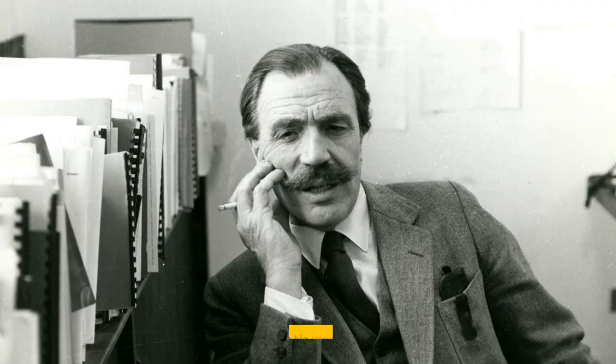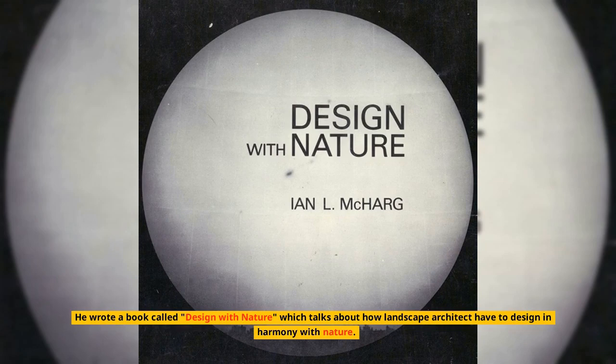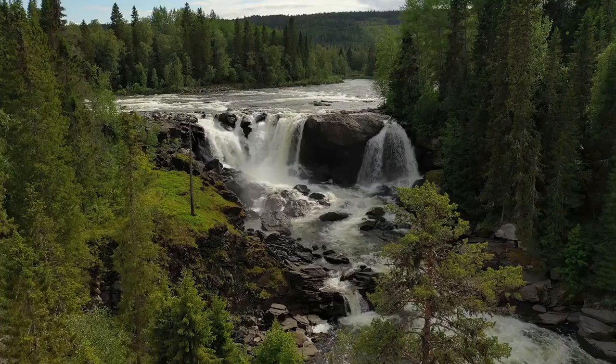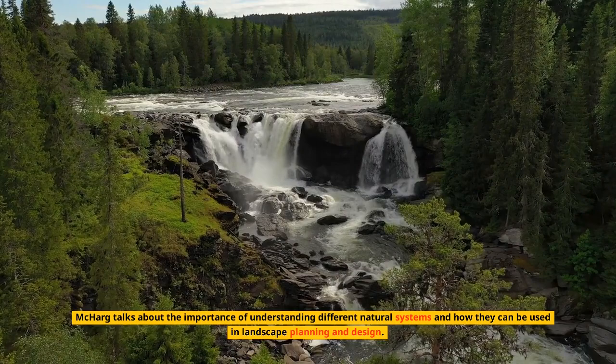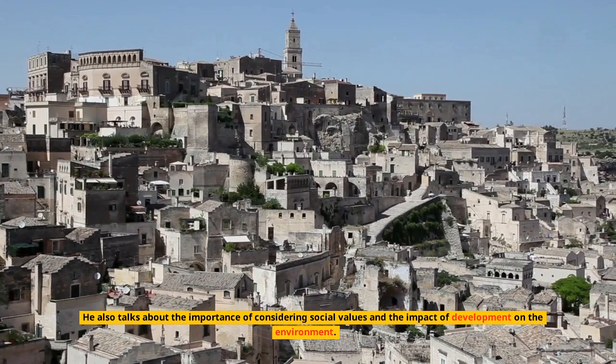A landscape architect who had a big impact on the subject is Ian McHarg. He wrote a book called Design with Nature, which talks about how landscape architects have to design in harmony with nature. McHarg talks about the importance of understanding different natural systems and how they can be used in landscape planning and design. He also talks about the importance of considering social values and the impact of development on the environment.